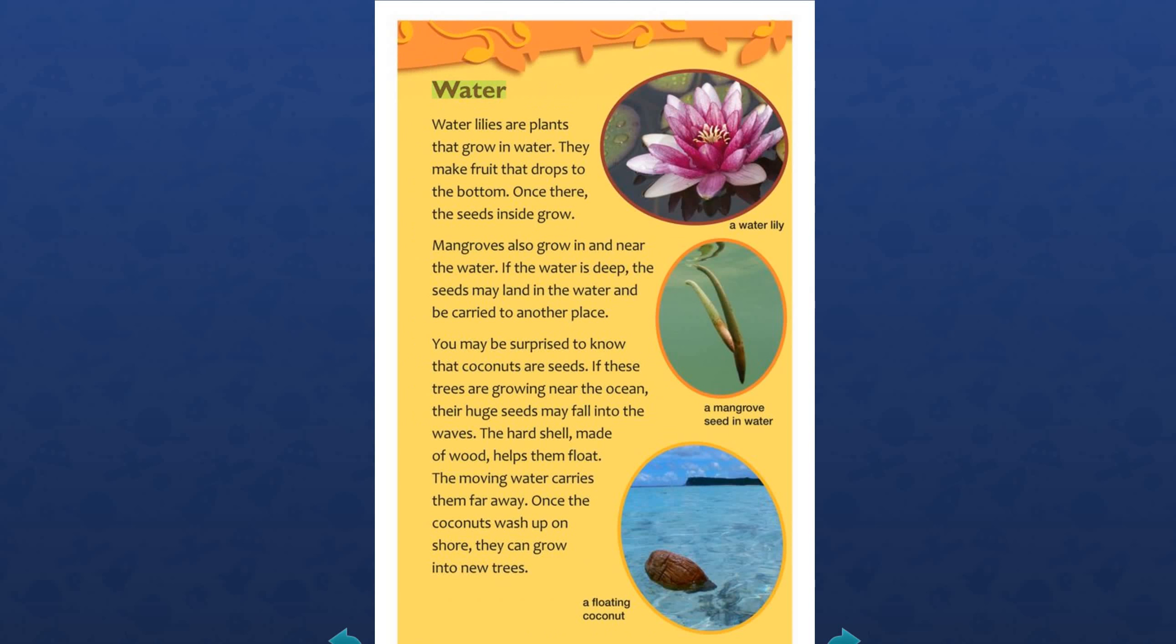Water: Water lilies are plants that grow in water. They make fruit that drops to the bottom. Once there, the seeds inside grow. Mangroves also grow in and near the water. If the water is deep, the seeds may land in the water and be carried to another place. You may be surprised to know that coconuts are seeds. If these trees are growing near the ocean, their huge seeds...